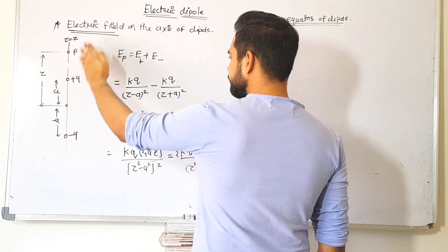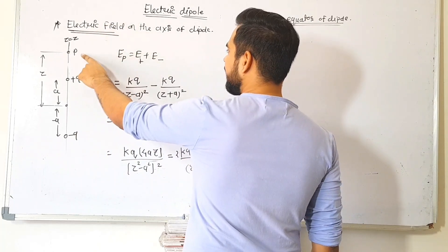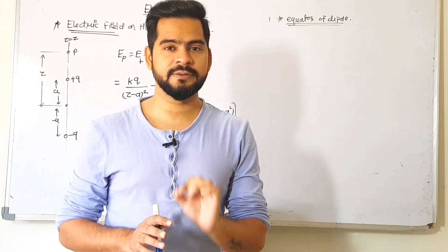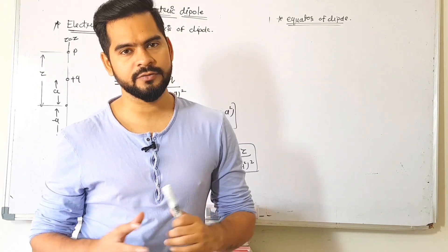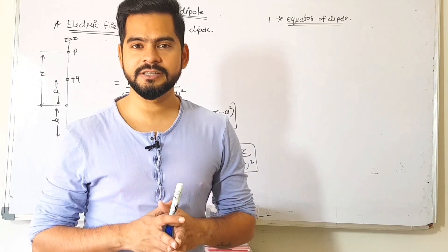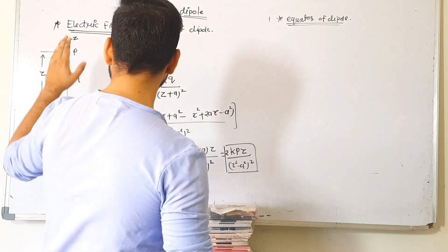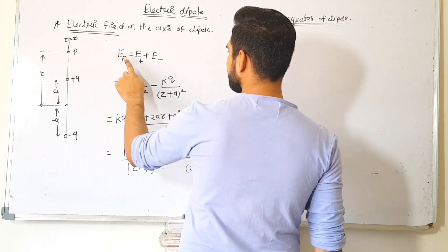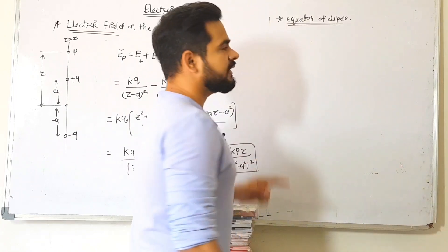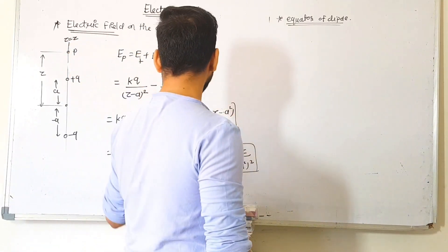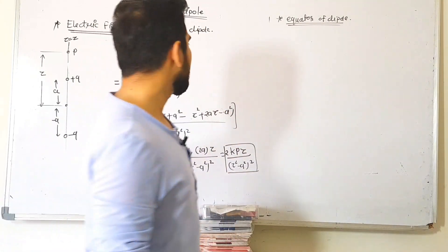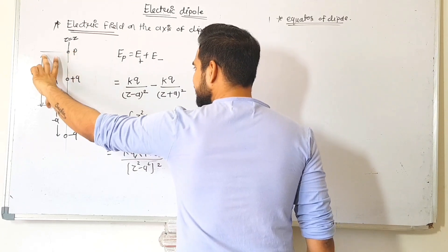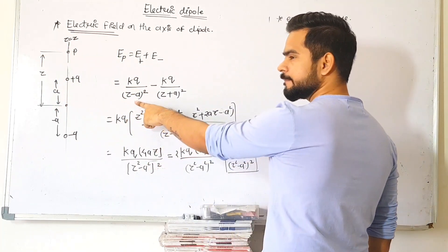This is the dipole axis. Point P is on the z-axis at distance z. Since we have two charges — one positive and one negative — each creates an electric field at P. The net electric field is E_plus + E_minus. The electric field due to the positive charge uses the formula kq/r², where the distance from +q to P is (z − a), so E_plus = kq/(z−a)². For E_minus, the distance from −q to P is (z + a), so E_minus = kq/(z+a)².